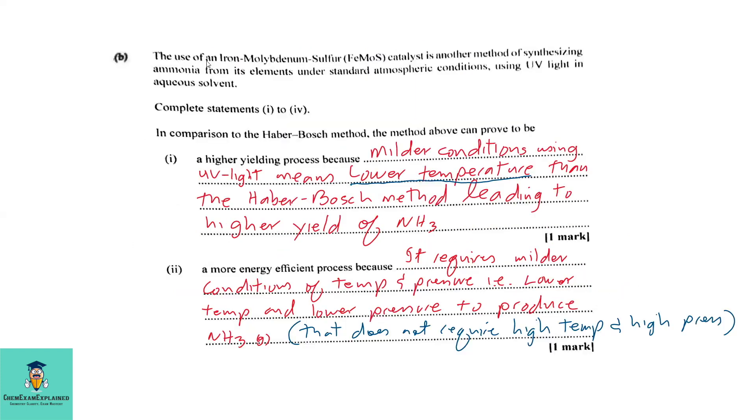Part B: The use of an iron molybdenum sulfur catalyst is another method of synthesizing ammonia from its elements under standard atmospheric conditions using UV light in aqueous solvent. Part 1: Complete statements 1 to 4. In comparison to the Haber-Bosch method, the method above can prove to be a high yielding process because milder conditions using UV light means lower temperature. And we had already discussed that lower temperature would favor the forward reaction. So milder conditions using UV light means lower temperature than the Haber-Bosch method leading to higher yields of ammonia.